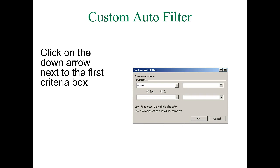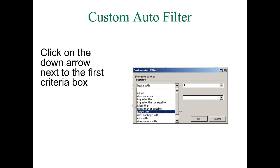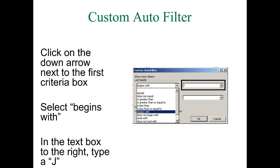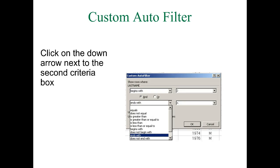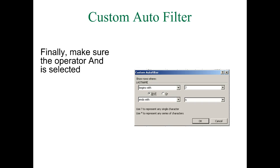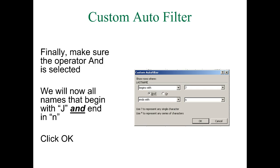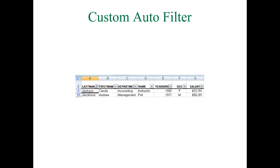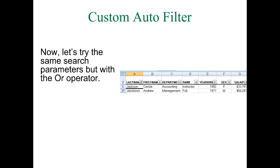Here we can do our AND or OR searches — you can see the AND operator and OR operator. Click on the down arrow and select Begins With, then type the letter J. We want a last name that begins with J. Now click the next down arrow, select Ends With, and type the letter N. Make sure the AND operator is selected and click OK. You can see we only have two results — Jackson and Jacobson — and both satisfy the criteria: begins with J and ends with N.